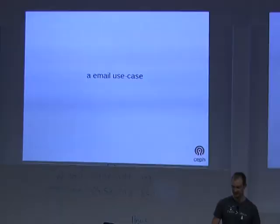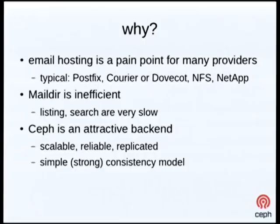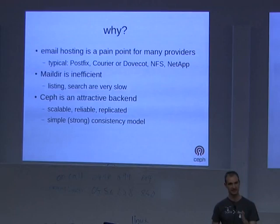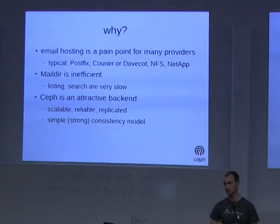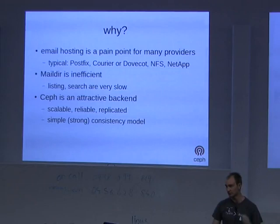One of my pet peeves is the way a lot of service providers deal with email. Email hosting tends to be a pain for a lot of hosting providers. Typical solutions use tools like Postfix and Courier and Dovecot for IMAP. People are usually storing things in Maildir format, which is not the most efficient thing in the world. They tend to use NFS file servers, which get hammered very hard, performance tends to suck, it's expensive, file servers fail. Maildir in particular is very inefficient, especially when listing the contents of a mailbox — it stores every message in a separate file and has to open every file and read the headers to get your from, to, and subject just to list your mailbox. On the other hand, Ceph is an attractive back end because it already gives you reliability, scalability, and a simple consistency model.